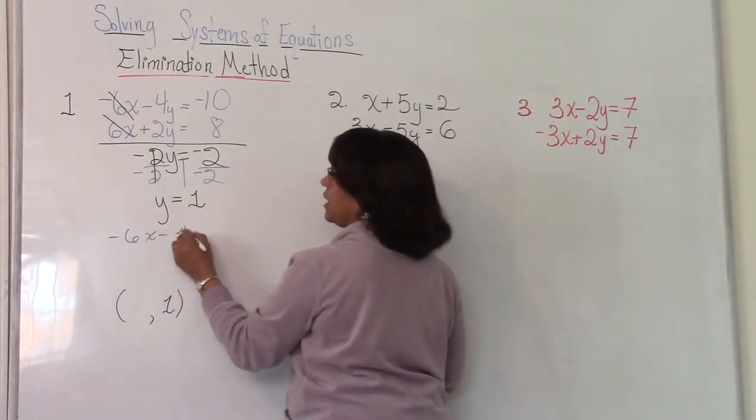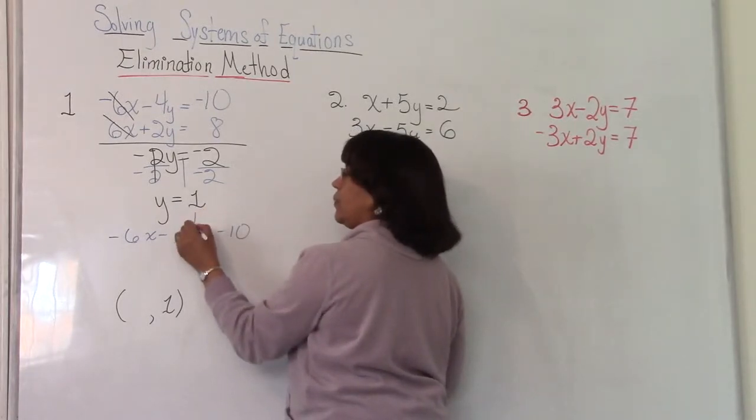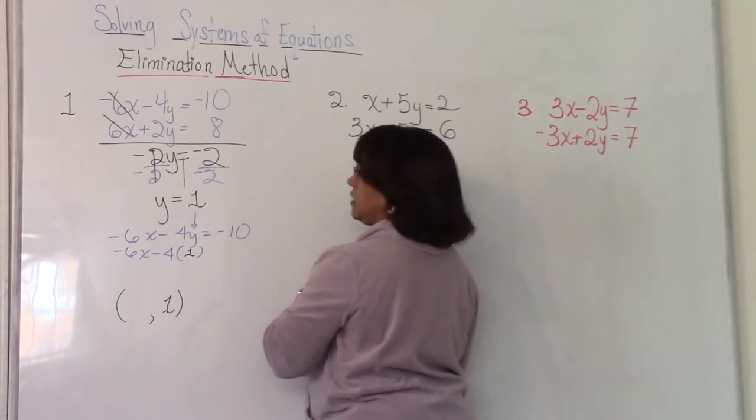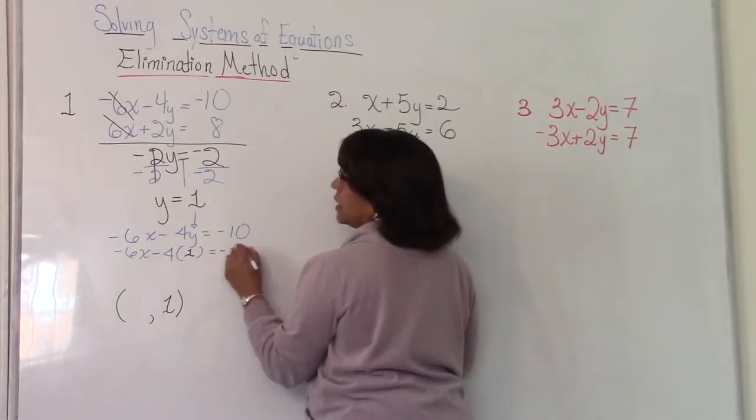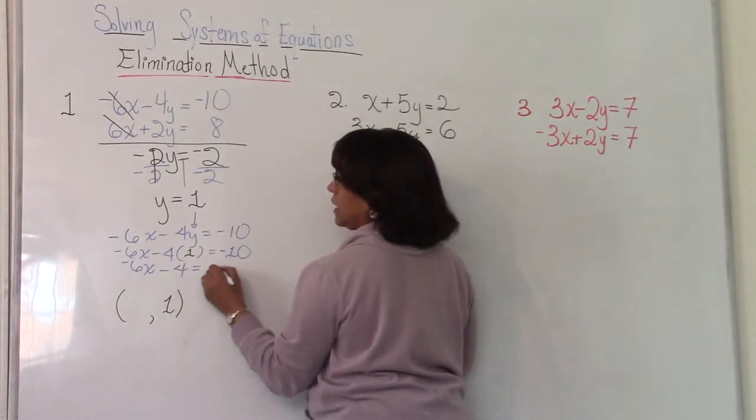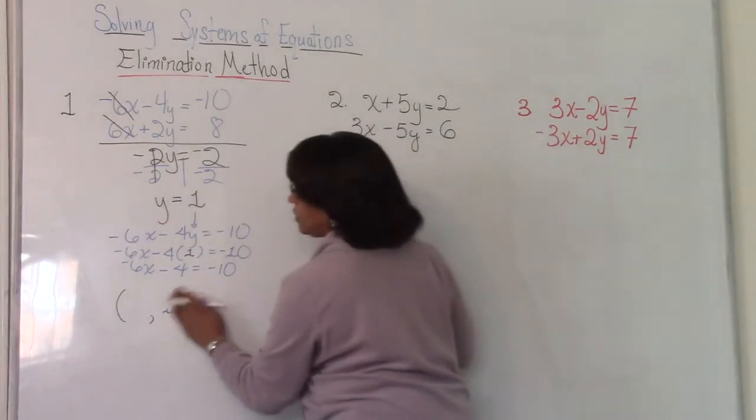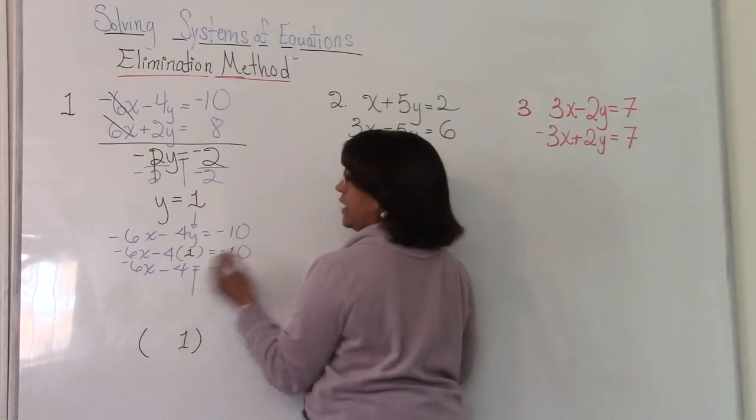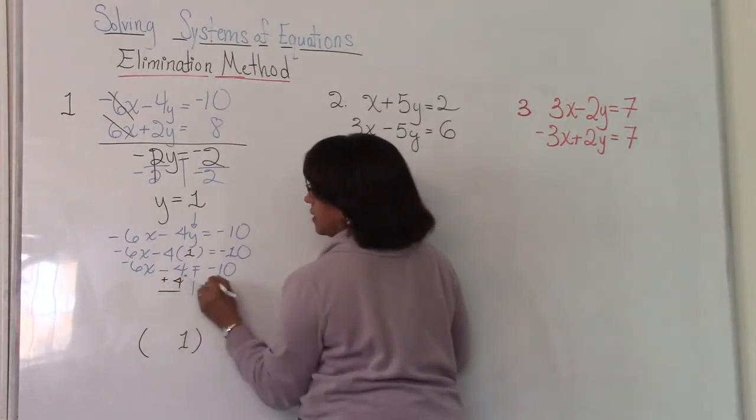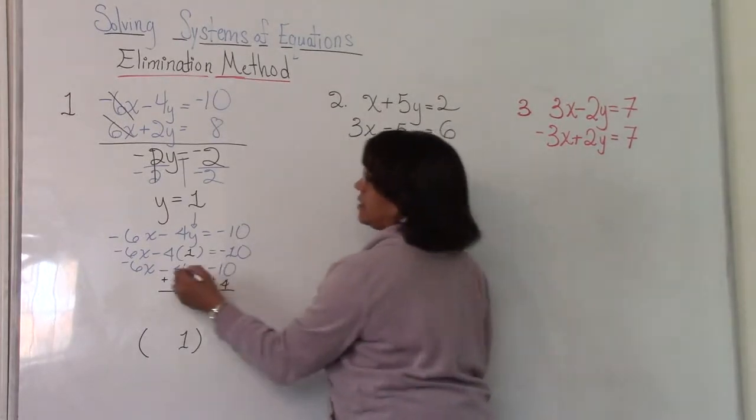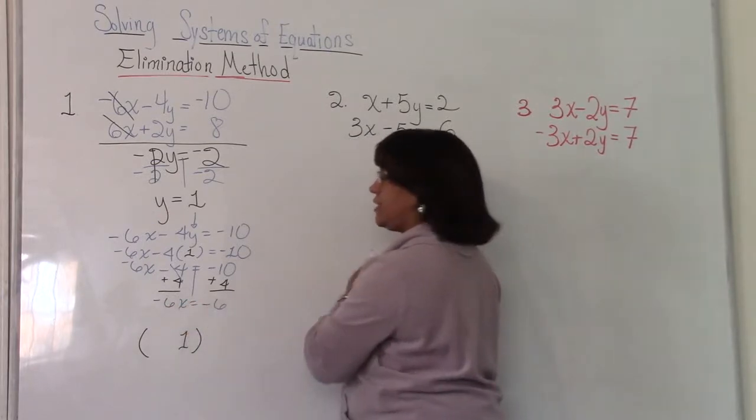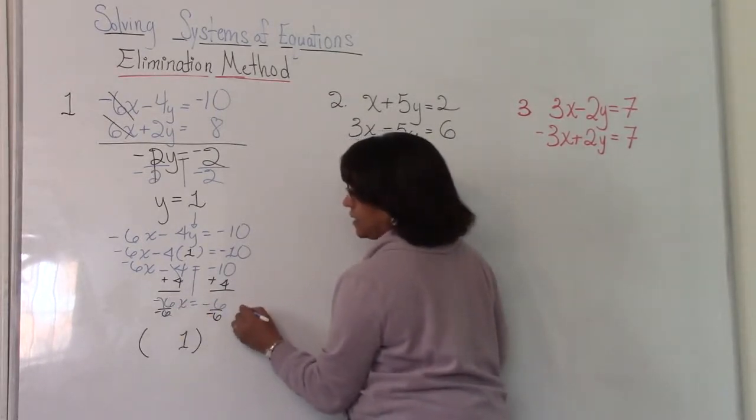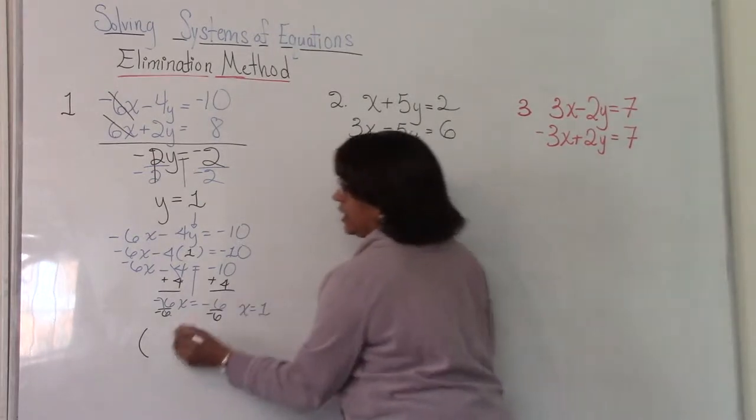Negative 6x minus 4y equals negative 10. In place of y, we're going to put 1. So negative 6x minus 4 times 1 is equal to negative 10. And then we have to solve for x. We have negative 6x minus 4 is equal to negative 10. So we already know that our y is 1. The inverse of subtraction is addition. So we're going to add 4 to both sides of our equation. Now we have negative 6x is equal to negative 6. And what's your last move? Divide both sides by negative 6. And it looks like x is equal to 1.